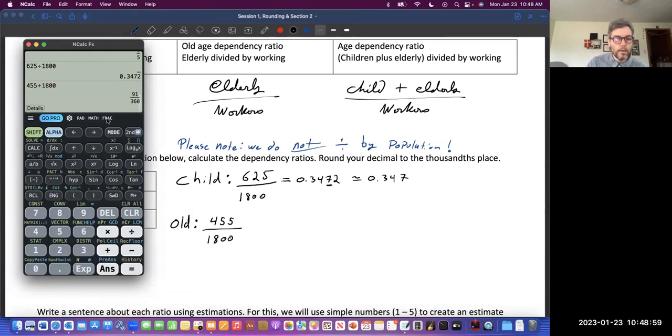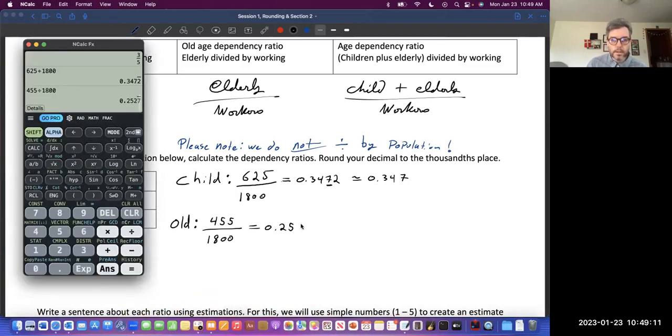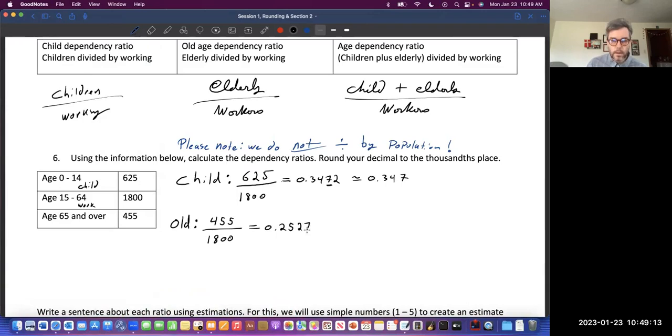Let's see what happens. 455 divided by 1,800 is 0.2527. We round to the nearest thousandth, so that's that 2. We look to the next digit, that's a 7, so that 2 is going up to 0.253.